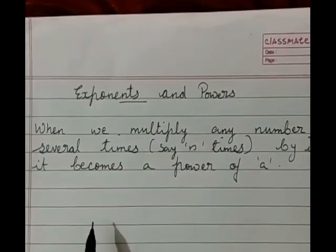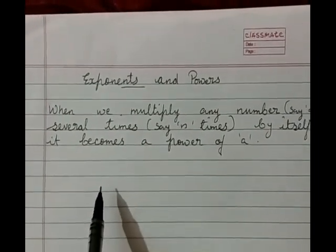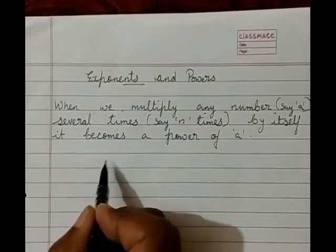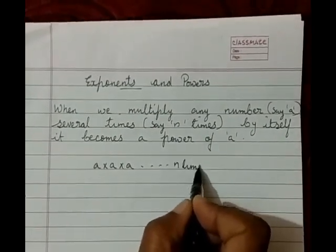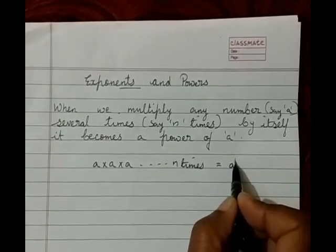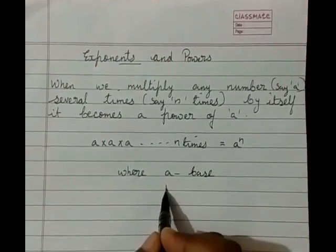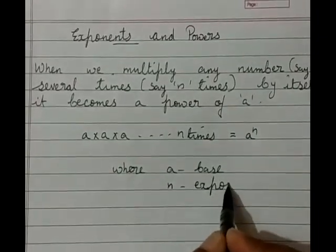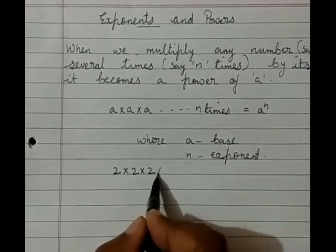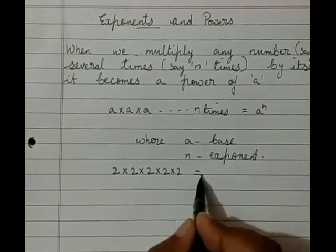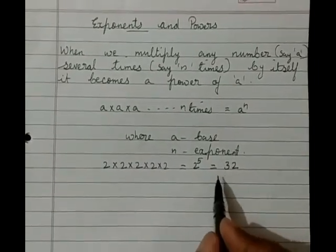Let us see what are exponents and powers. When we multiply any number several times by itself, it becomes the power of that number. That is, if you multiply a, n times, it becomes a to the power n, where a is known as the base and n is known as the exponent. For example, if you multiply 2 five times, it becomes 2 to the power of 5, that equals 32. That means 32 is the 5th power of 2.